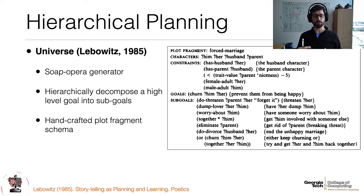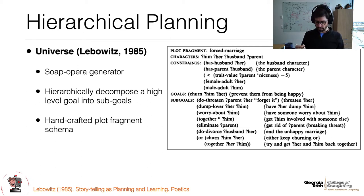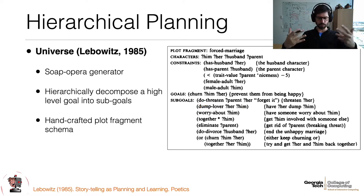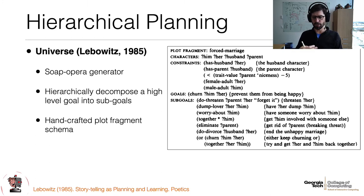As our understanding of algorithms became more sophisticated, we started looking at hierarchy in more sophisticated ways. The Universe system does soap opera generation by formalizing knowledge in terms of plot fragments. These plot fragments achieve certain goals and can only be applied when certain constraints are met. Each sub-goal then queues up a different plot fragment — there might be many ways for one character to dump their lover, for example. High-level goals decompose into smaller and smaller pieces, and collecting them all together produces a story. These are handcrafted because soap operas are very formulaic.